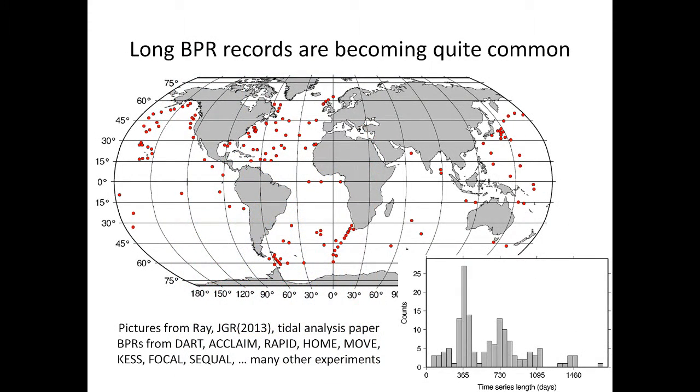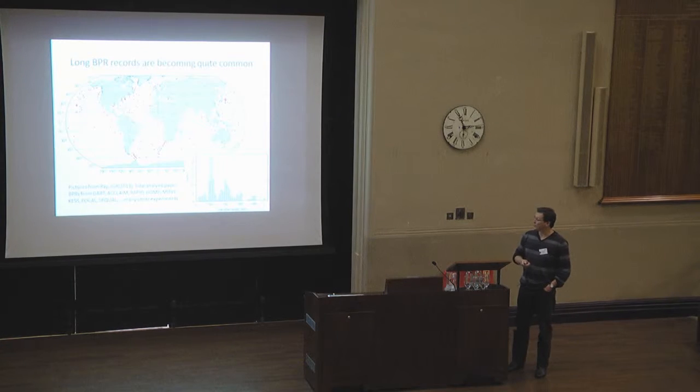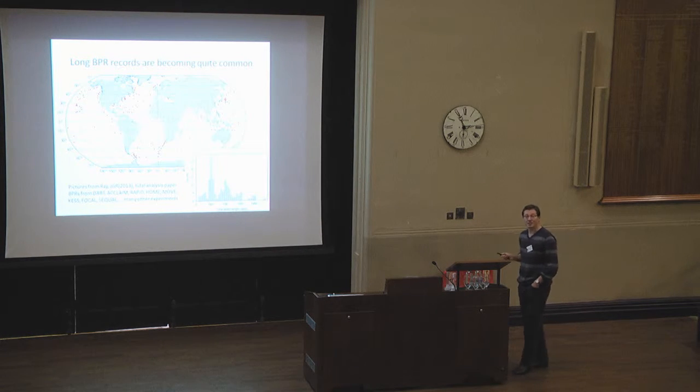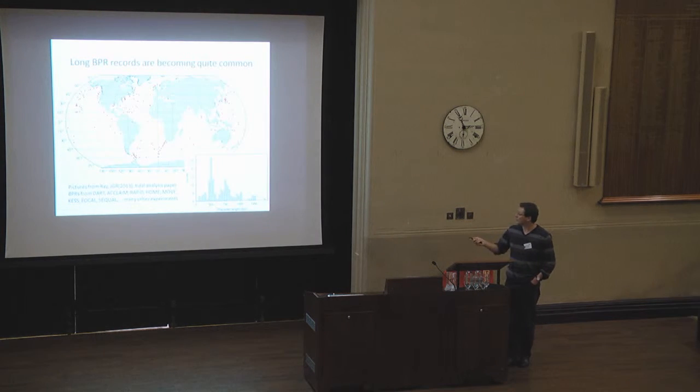And they're growing in number. This is from a recent paper of Richard Ray's on tidal analysis based on bottom pressure records. And you can see there is now actually quite a large number of dots on the map. That's quite new. Ten years ago there would have been far fewer. Lots of different experiments these are associated with. Probably getting on for half of these are from the DART array associated with tsunami monitoring. Some of them are to do with tides, measuring, getting long records for tides. But some of them are to do with different parts of ocean circulation.